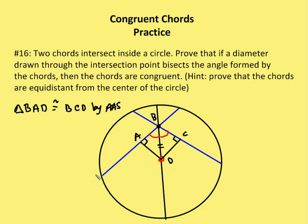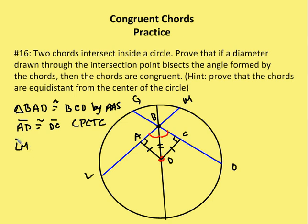Now I'm going to prove that the two chords are congruent. Since triangles BAD and BCD are congruent, AD and DC are congruent by CPCTC. And since AD and DC are congruent — meaning the distances from the center to the chords are equal — the chords LM and GO are congruent by the theorem that states if the distance between the center and the chords is congruent, then the chords themselves are congruent.